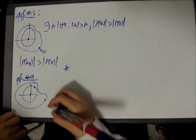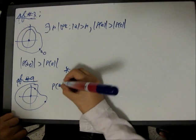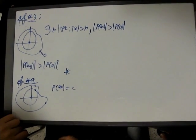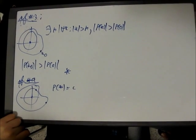But, that means that P of Z is constant, which is, again, a contradiction, as before.